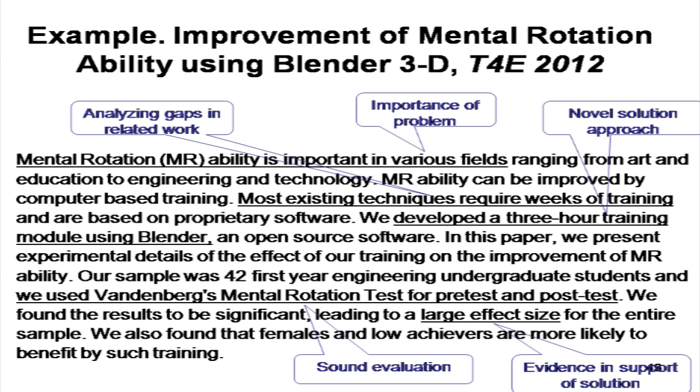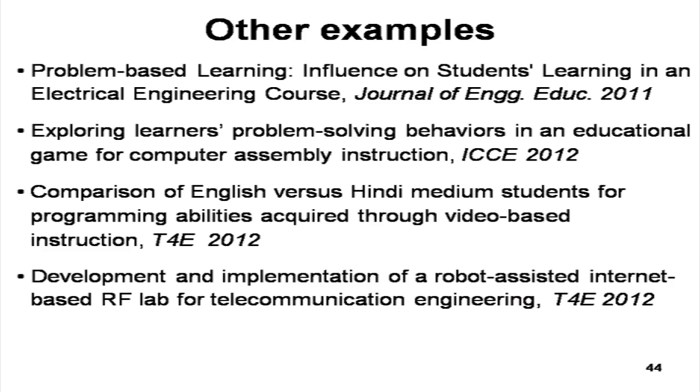To put all of this together, some good features in published research papers are: analyzing gaps, establishing importance of the problem, a novel approach, and sound evaluation. There are some other examples — I will pause at this slide so that you can read and get an idea of the different types of published research papers, different examples and ideas that people have tried. All these have been written by faculty members who are also now doing research in educational technology — some by PhD students; the previous example I showed was by a PhD student.